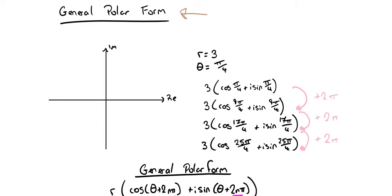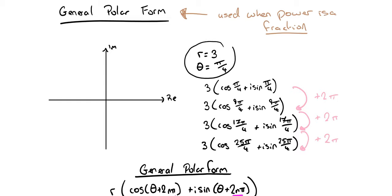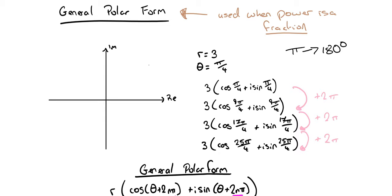General polar form is used when the power is a fraction. To explain: if I had a complex number with a modulus of 3 and an argument of pi over 4 — well, pi is 180 degrees, so a quarter of pi would be 45 degrees. The argument is somewhere along this line, and its modulus is 3, so it's 3 out from the origin. I'm going to call this complex number z.